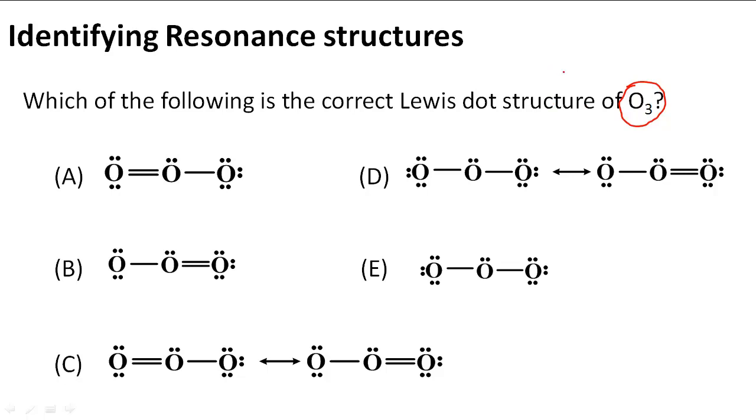So O3, or what they call ozone, is a molecule that we can't represent really by drawing just one Lewis structure. Because of the information that we know about the bond lengths of oxygen to oxygen bonds, we notice that they're the same. So we have to actually draw multiple Lewis dot structures to represent the ozone molecule.